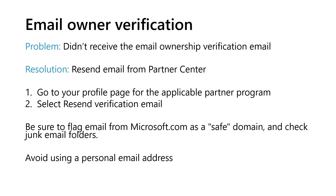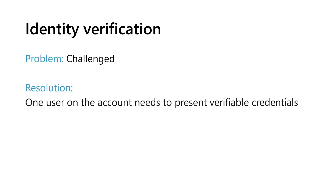Be sure to flag email from Microsoft.com as a safe domain and check your junk email folders. Identity verification can be in a past, rejected, or challenge state. If identity verification is in a challenge state, at least one user on the account needs to present verifiable credentials to prove their identity. Ensure that the user details on the account match the details on a supporting government-issued ID document. If there's a mismatch, either update the first and last name in the tenant or use a government-issued ID document with matching details. If there are issues obtaining verifiable credentials, refer to the help provided in the learn more link on the page.